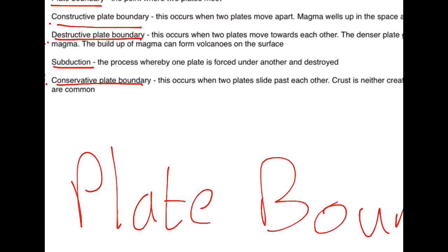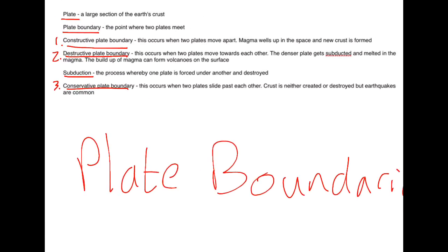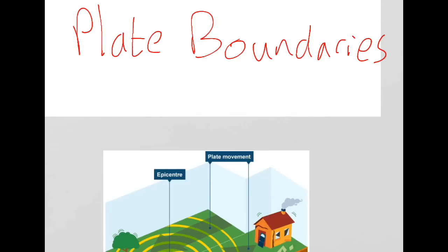The third type of plate boundary is a conservative plate boundary. This occurs when two plates slide past each other. Crust is neither created or destroyed but earthquakes are common.